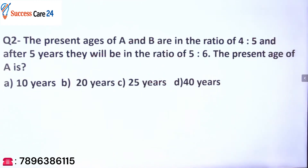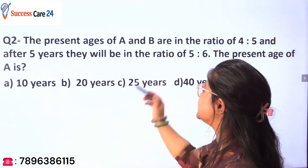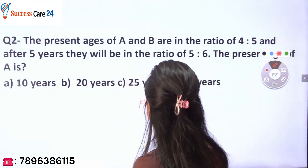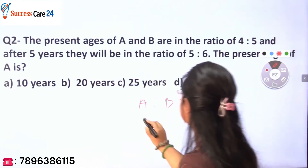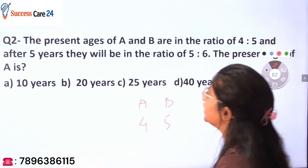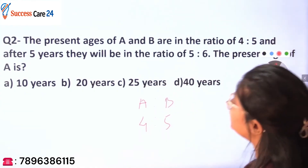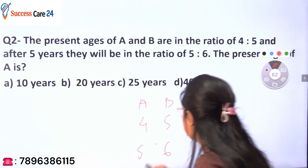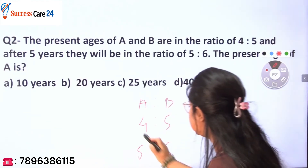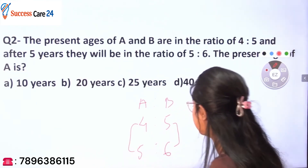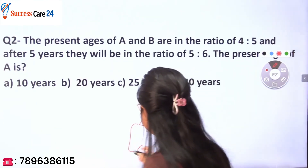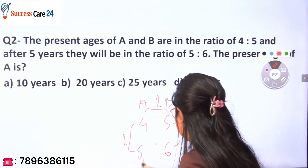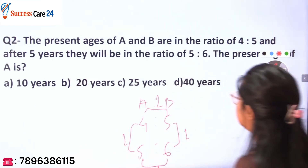In question number two, you are given that the present ages of A and B are in the ratio 4 is to 5. After 5 years they will be in the ratio 5 is to 6. Now look at the ratio differences: vertically the difference is 1, and horizontally the difference is also 1.